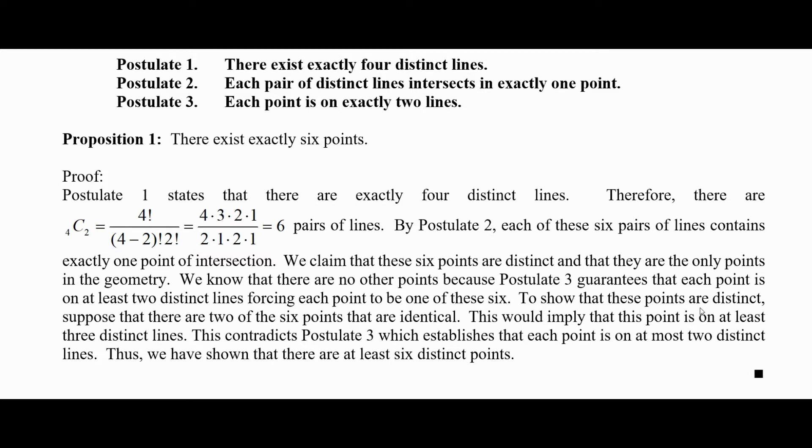And to show that these points are distinct, suppose that two of these six points are the same. This would imply that this point is on at least three distinct lines. But this contradicts postulate three, which established that each point is on at most two distinct lines. Therefore we've shown there are at least six distinct points. And we already established earlier that there's exactly six points. So there are exactly six points.